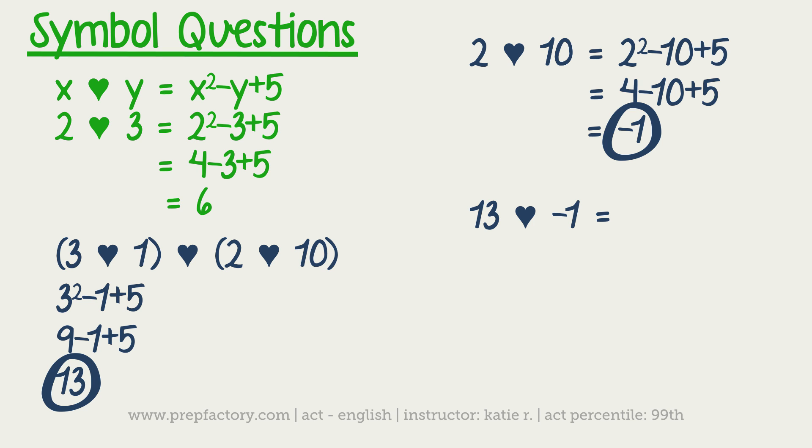So 13 squared minus negative 1 plus 5, which gives us 169 plus 1, because 2 negatives make a positive, plus 5, which is going to give us 175, and that would be our final answer.